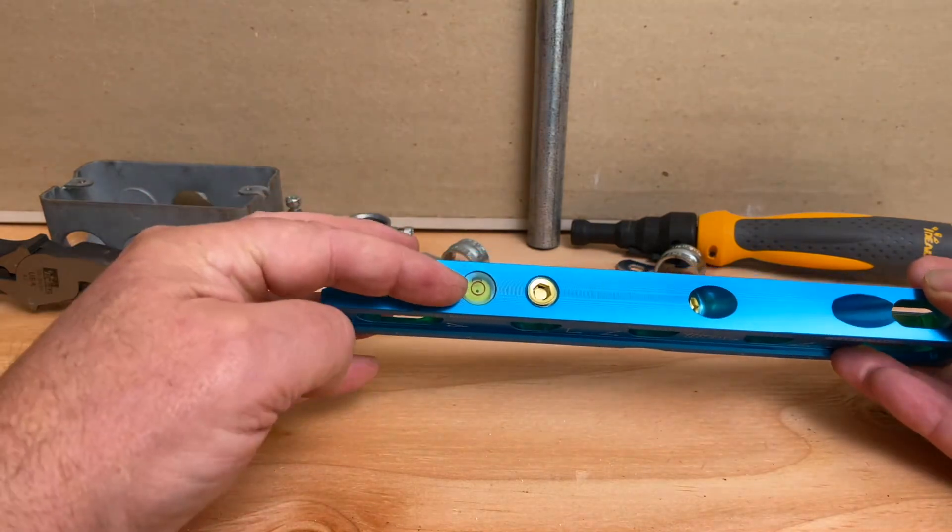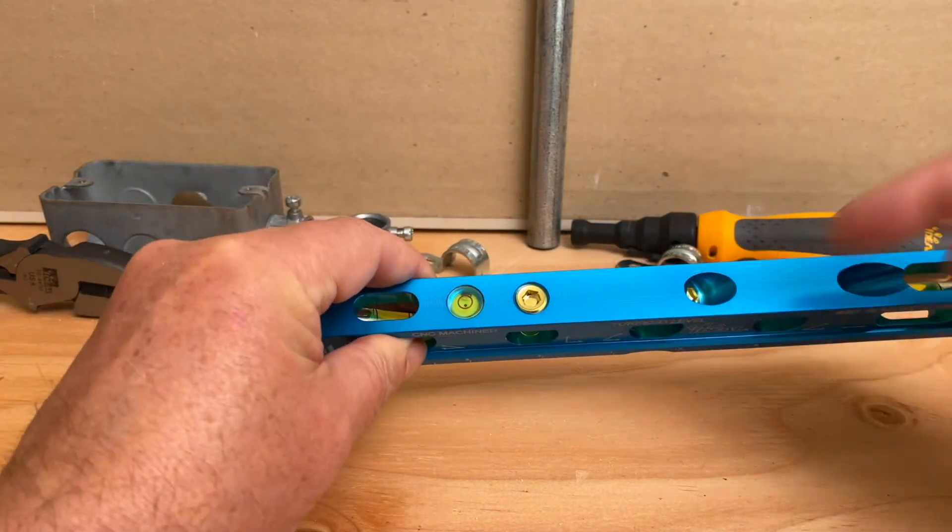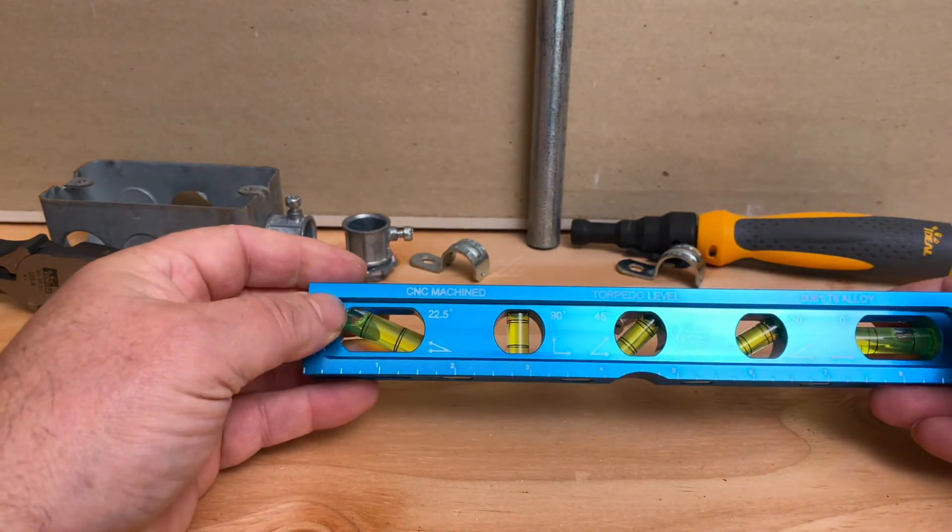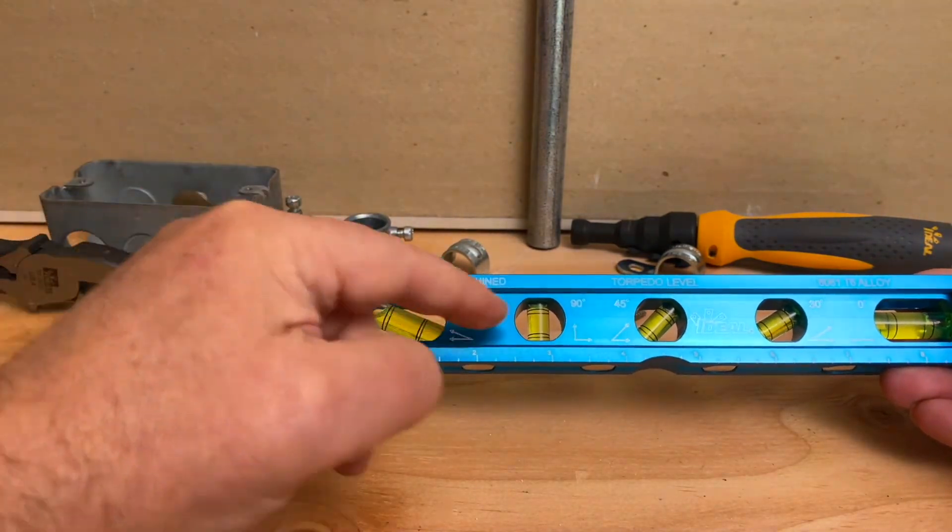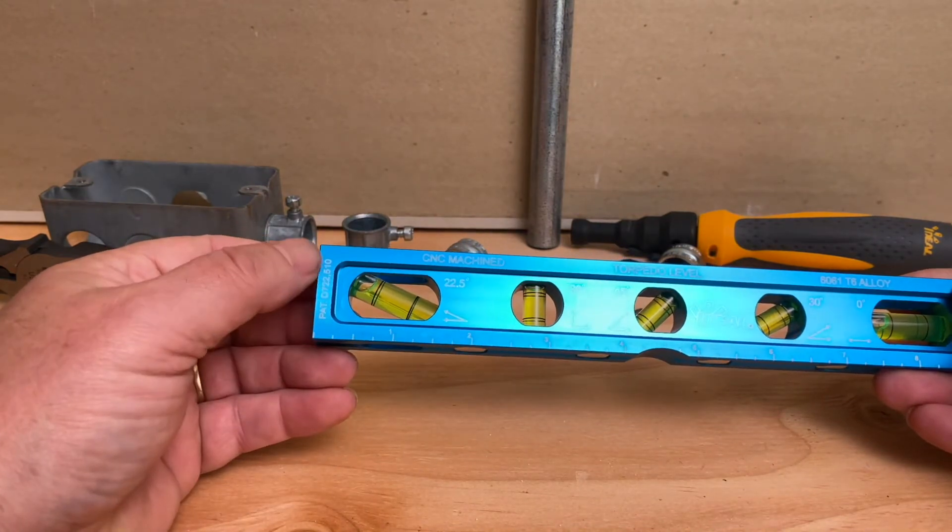On the top here you also have a bullet level. You have easy access here to replace any of the levels you need and the package did come with two additional, one large and one small. So if they do go bad in the field or if you accidentally break it, you can replace it out there.